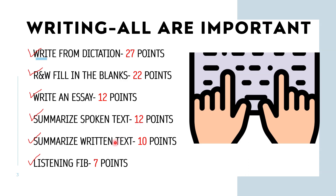Next is Summarize Written Text, the first module of writing, contributing 10 points. According to me this is free of cost — you just pick up lines from the passage and add connectors. Pick the first line, use a connector, then add the second line, use a connector like 'hence', then pick the third line. But again, keep within the word limit of 50 to 70 words and time limit of 10 minutes. This is the easiest task in PTE.